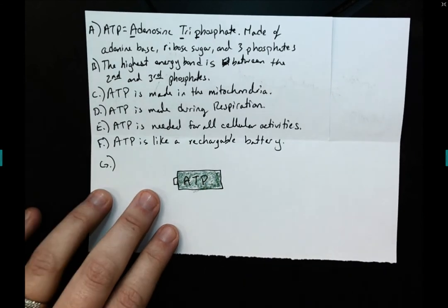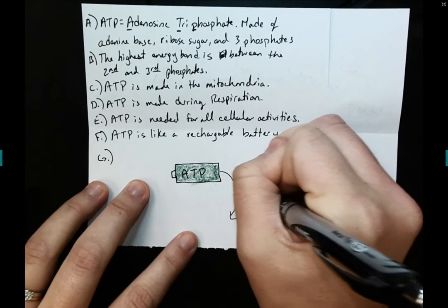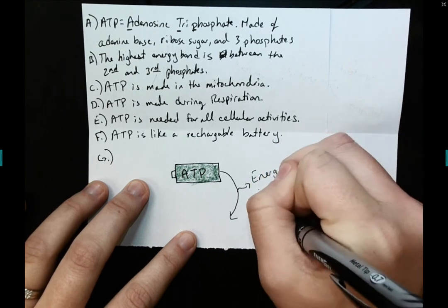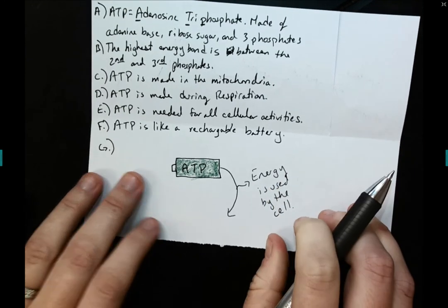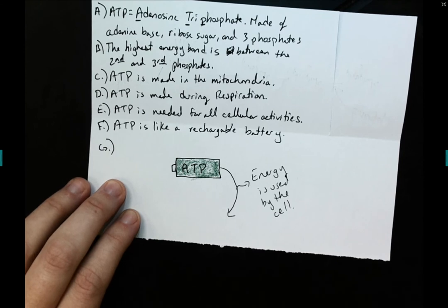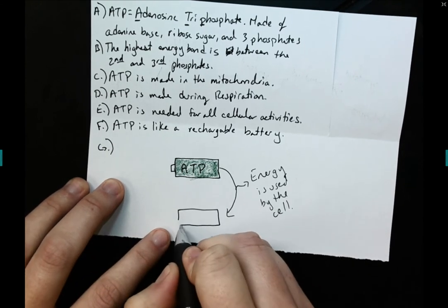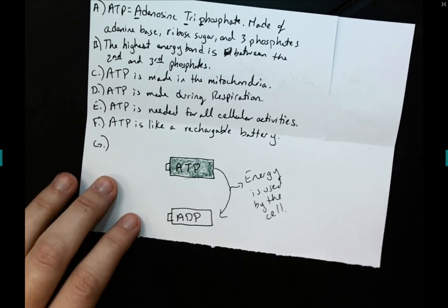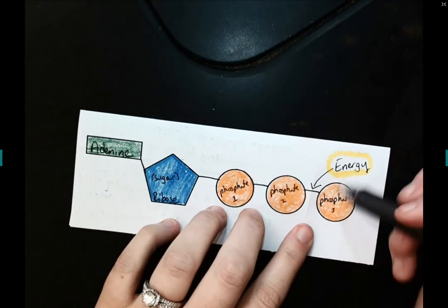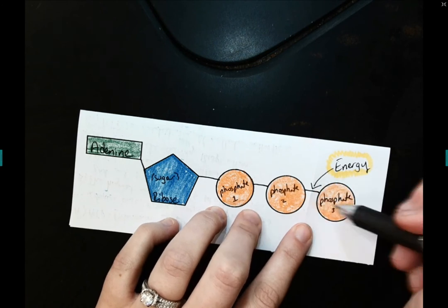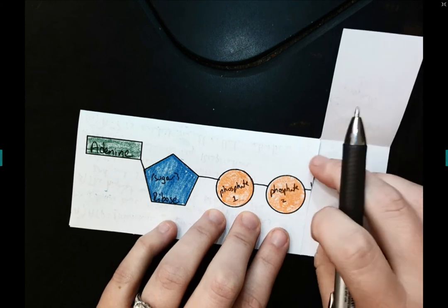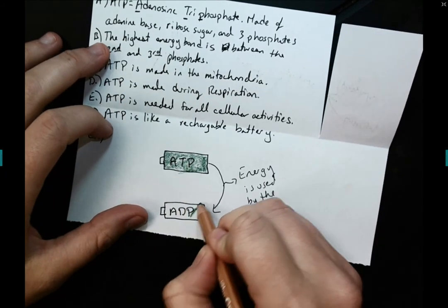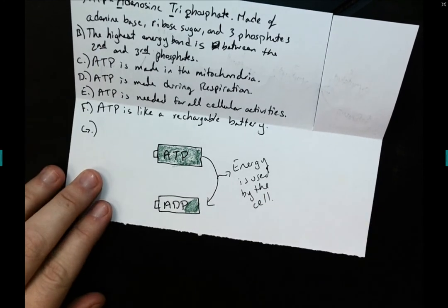But then my body goes and it uses that energy. So energy is used by the cell. We use up some of that energy living, breathing, digesting. So we still have a battery, but instead of ATP we have ADP. Because in order for energy to be used, we know that we are going to sever that bond between the second and third phosphate. And this creates adenosine diphosphate. So the battery has been drained. It's not full anymore. So we've got an empty battery.